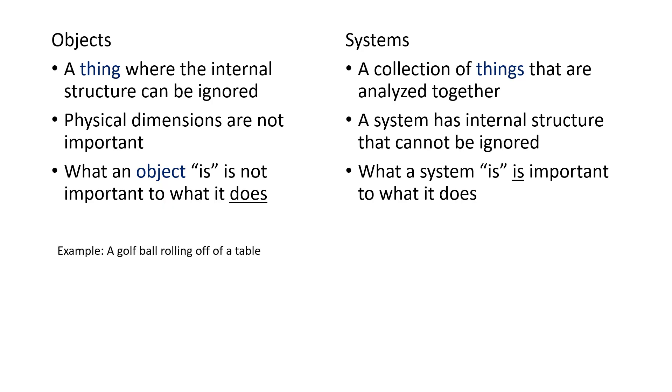For example, an object would be a golf ball rolling off a table. The fact that it is a golf ball made of a different material than a tennis ball doesn't have any effect on the physics of it rolling off a table. An example of a system would be a golf ball that you're trying to dissolve in acid. If you're going to dissolve a golf ball, you care deeply about what it is made out of, the arrangement of the atoms and molecules that make a golf ball different than a tennis ball.